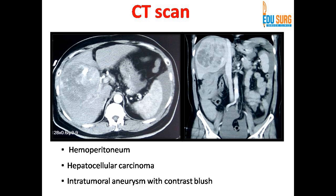You can also see hemoperitoneum — fluid around the spleen, fluid around the liver, as well as a collection in the pelvis. So this patient was definitively a ruptured hepatocellular carcinoma with hemoperitoneum.